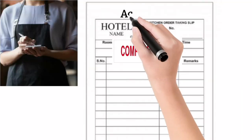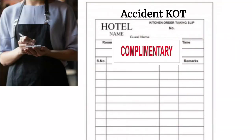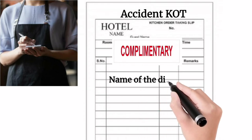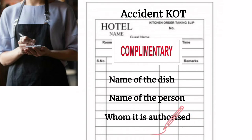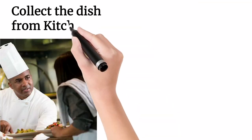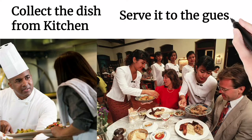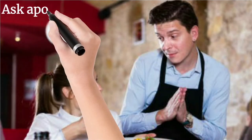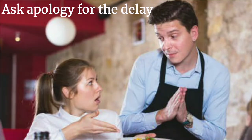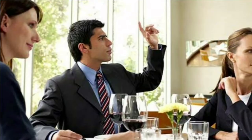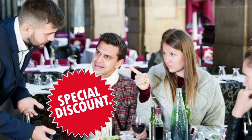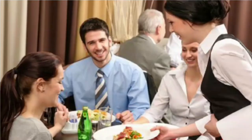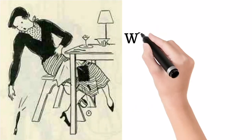If a glass container is broken into pieces, collect the larger pieces onto a pan and clean the area carefully. The waiter must make an accident KOT mentioning the name of the dish and the name of the authorized person for reference. Collect the new dish prepared from the kitchen and serve it to the guest immediately. Apologize for the delay and inconvenience caused. If the delay is quite long, inform the manager on duty to offer a discount or complimentary food to ensure guest satisfaction.